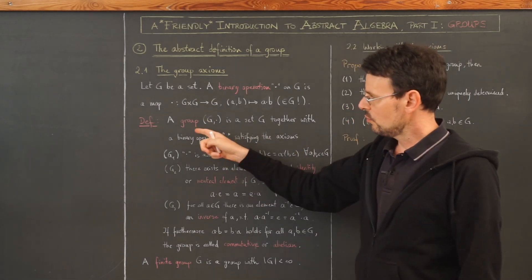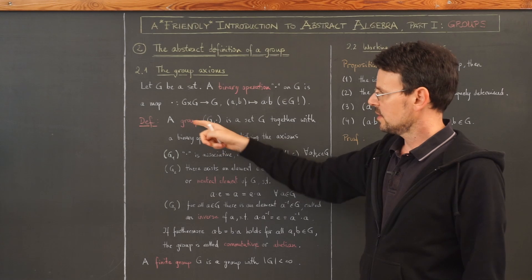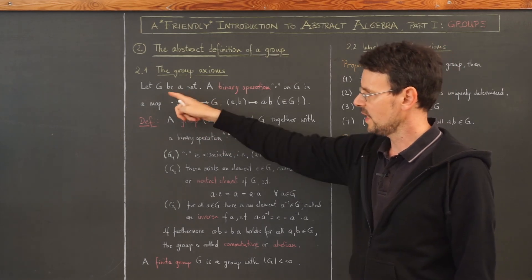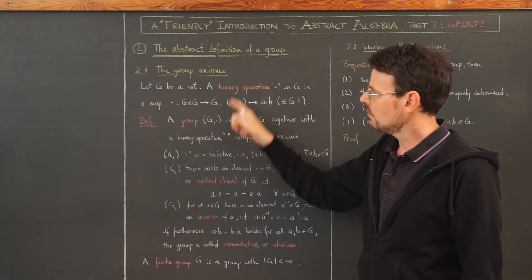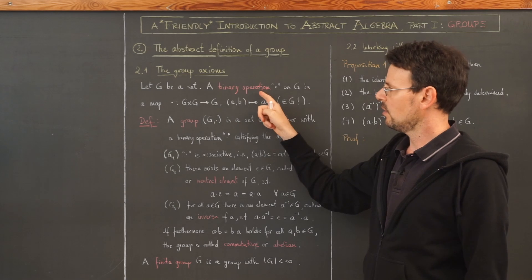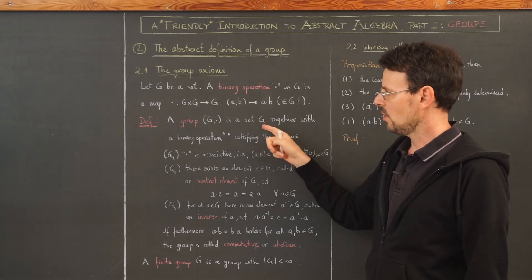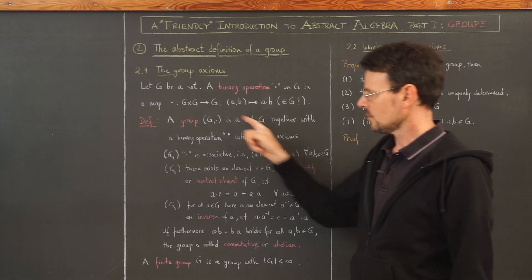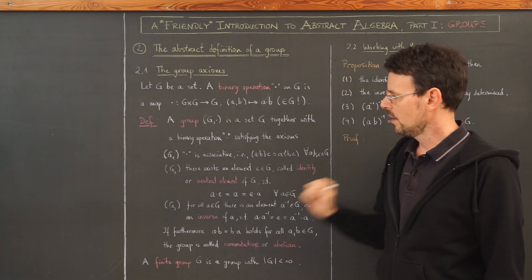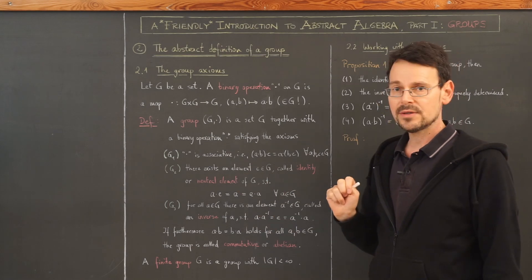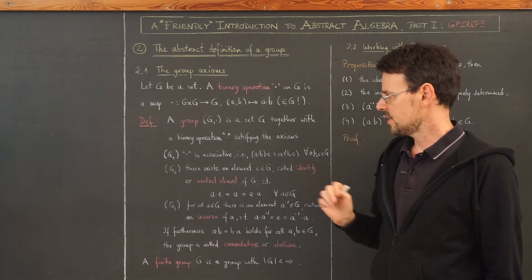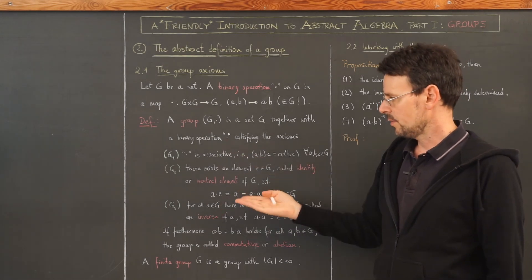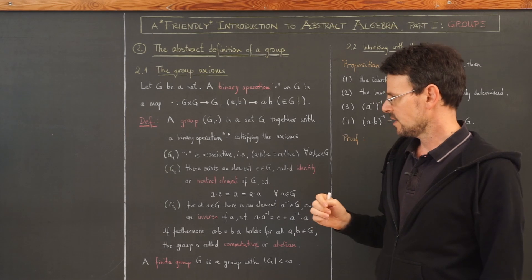A group is the following pair. For a group, we have a set and a binary operation on this set, such that the following three axioms — called the group axioms — are satisfied.